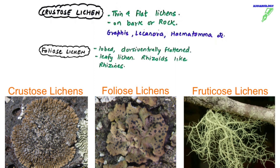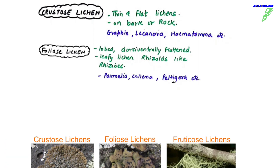Second are foliose lichens — the word folio means leaf, so they are leafy lichens. They are lobed and dorsi-ventrally flattened. They have rhizine — not true rhizoids or roots, but rhizines that work like rhizoids. An example of foliose lichen is Parmelia, Collema, and Peltigera.